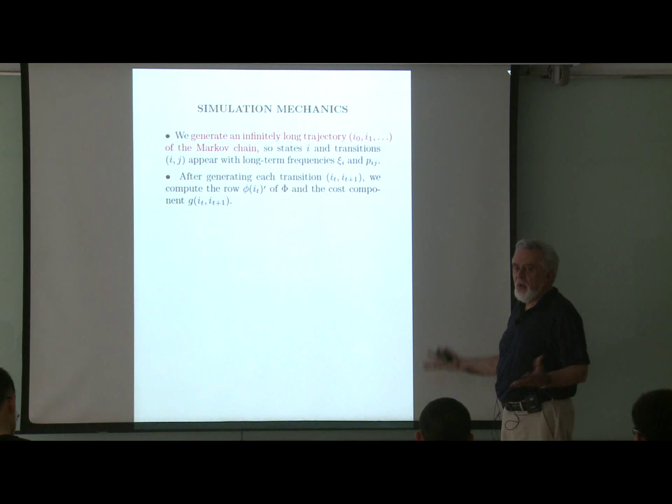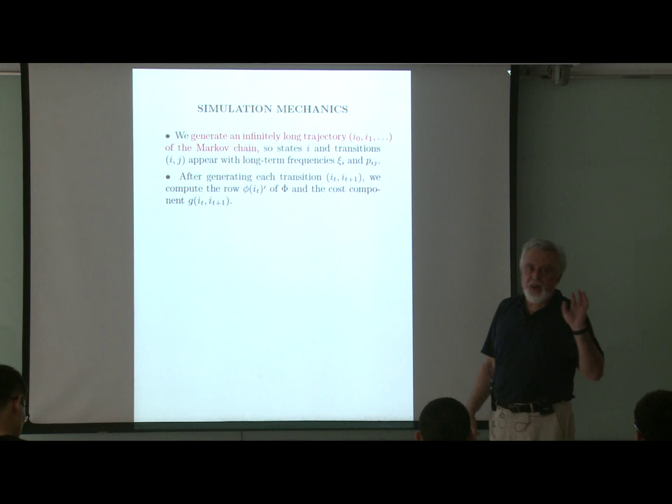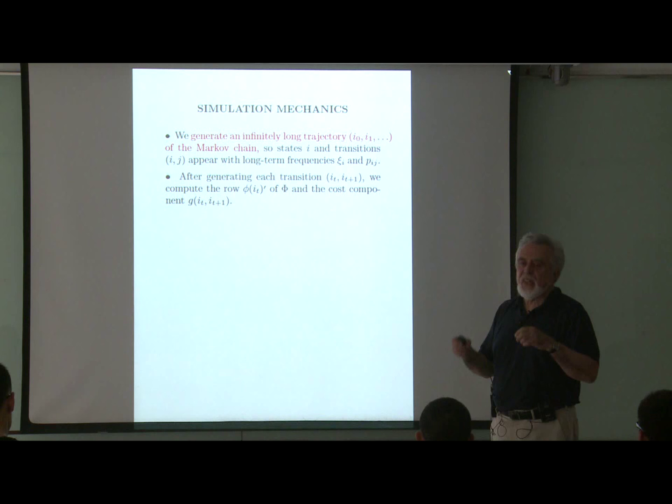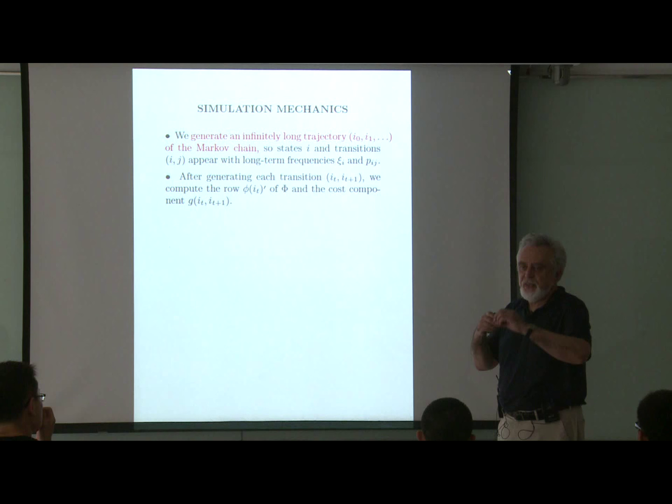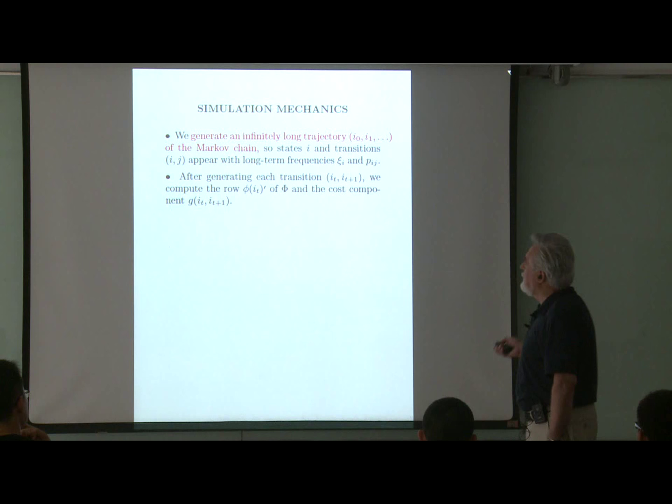To approximate the matrix by simulation, we express quantities as expected values — somehow express them as expectations with respect to some distribution, then sample according to that distribution and make the approximations. What is important is to introduce a sampling method that involves the steady state probabilities of the Markov chain, so we cannot generate samples arbitrarily. Instead, we use the Markov chain to generate the samples.